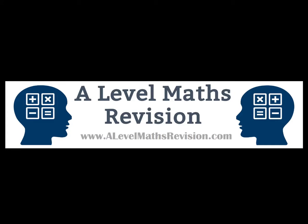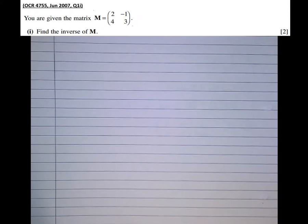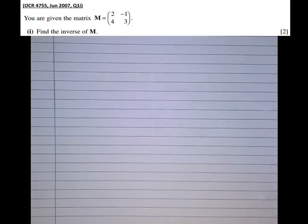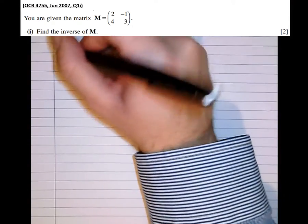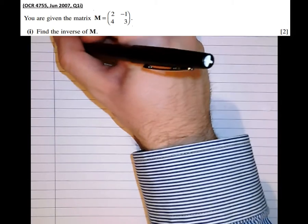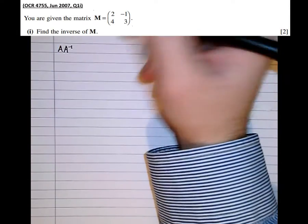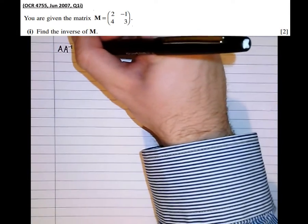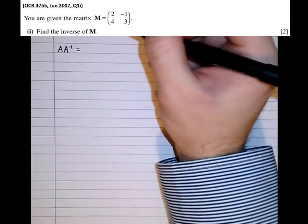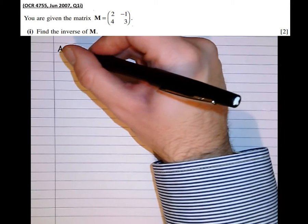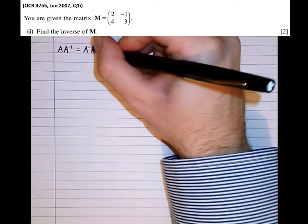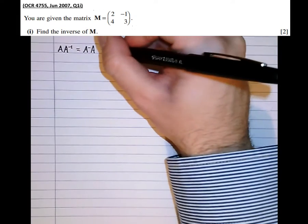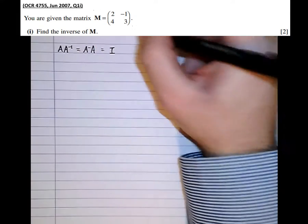In this tutorial video we're going to have a look at finding the inverse of a 2 by 2 matrix. First of all, what is an inverse? Well, an inverse of a matrix A is another matrix which we call A to the minus 1, such that when we multiply by it, either to the right or to the left, we end up with the identity matrix.